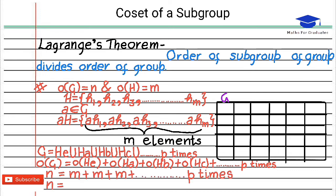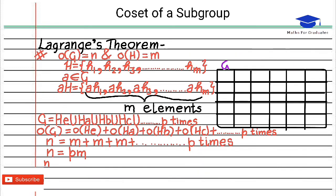Therefore n equals pm and n over m equals p. That means m divides n, that is order of H divides order of G. We have proved Lagrange's theorem.